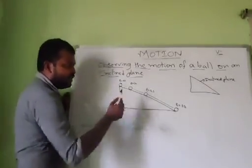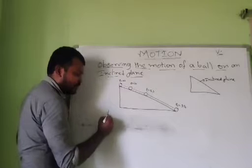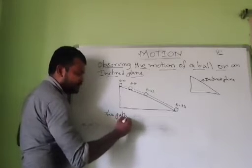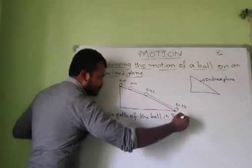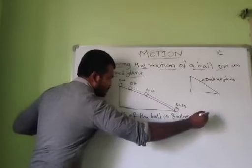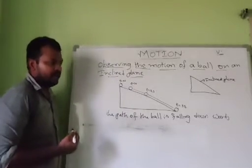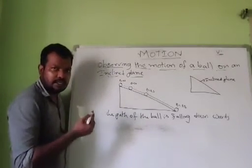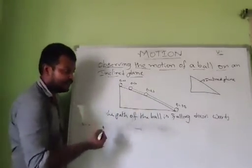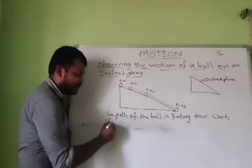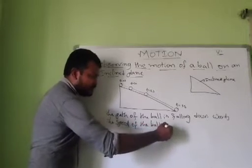So let's see that. What is the path of the ball? The path of the ball is falling downwards. What is the speed of the ball — is it increasing or decreasing? The speed of the ball is increasing, because it is covering more distance when it is falling down. So the speed of the ball is increasing.